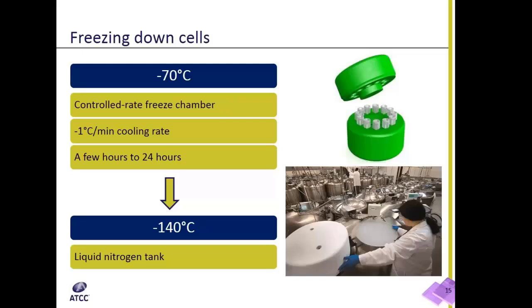Cells must be cooled at a rate of about minus 1 degree per minute in a freezer at minus 70 degrees Celsius. This is achieved with the use of a controlled rate freezer or controlled rate chamber.